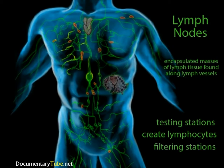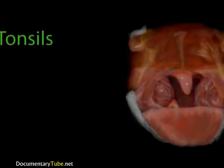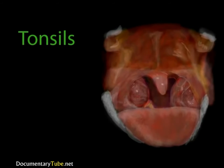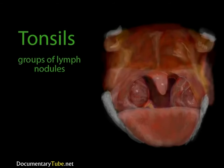Eventually, the lymph is returned to the circulatory system via the right and the left subclavian veins in the shoulders, just above the heart level. Lymph nodules can be found as single structures in the body, or they can be grouped together in small clumps. That's what the tonsils are — groups of lymph nodules under the mucous membrane in the throat. These lymph nodules form a protective ring around the throat, strategically located to protect the body from foreign invaders. If the tonsils get infected, they can become inflamed and abnormally enlarged. This condition is called tonsillitis. If the condition is chronic, the tonsils can be removed in a tonsillectomy.